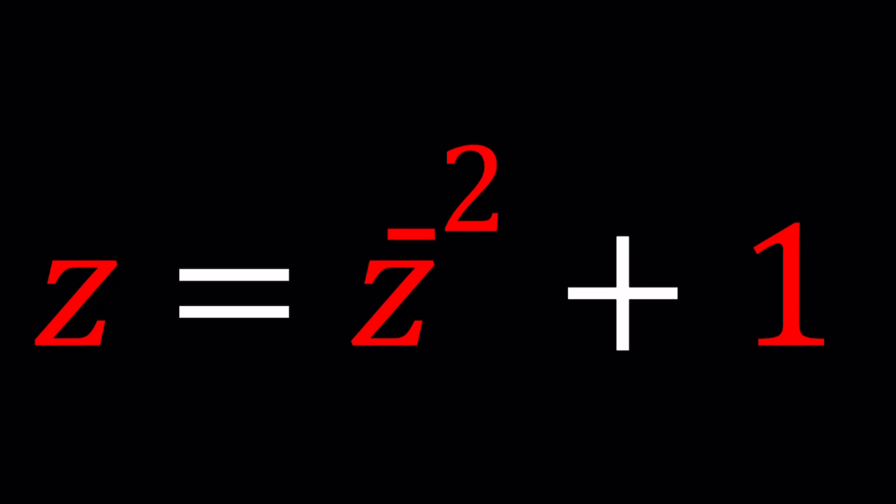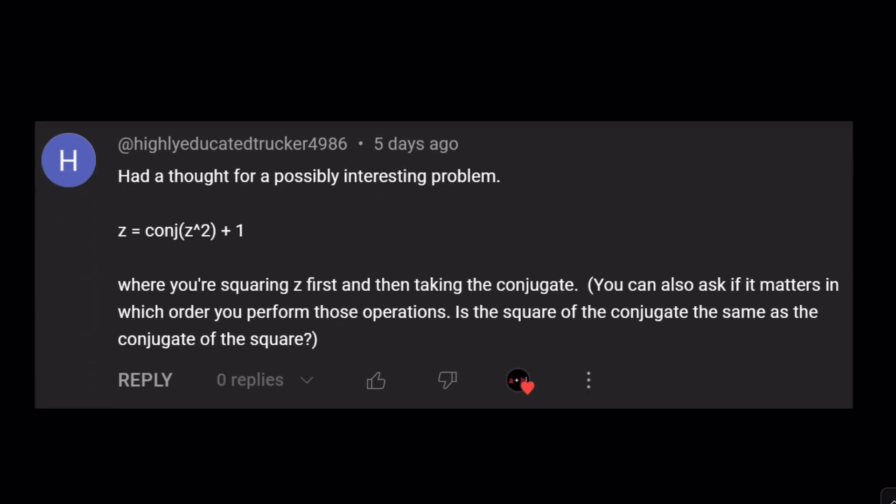So the complex conjugate of Z squared, and then 1 is added, and that's equal to the original number. And we're going to be solving for Z of course. Now this problem was suggested by a highly educated trucker. Thank you very much for the suggestion. I think this is a beautiful problem.